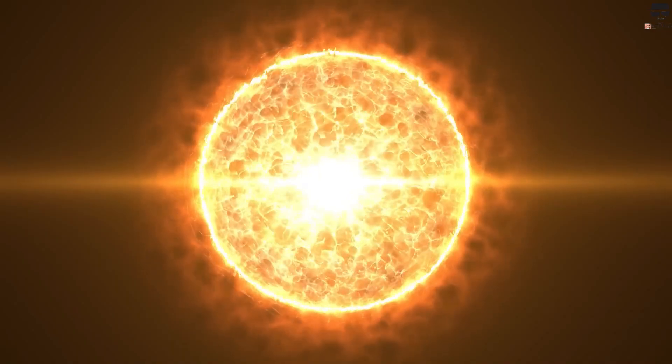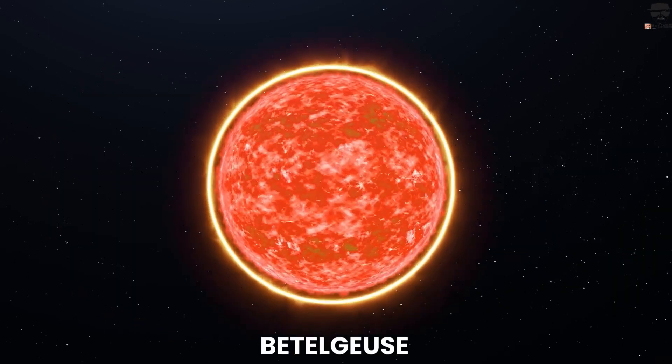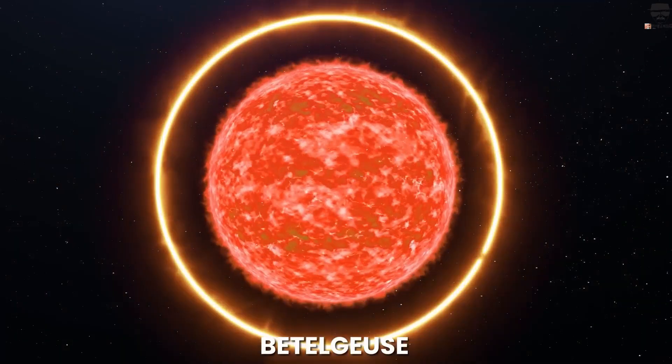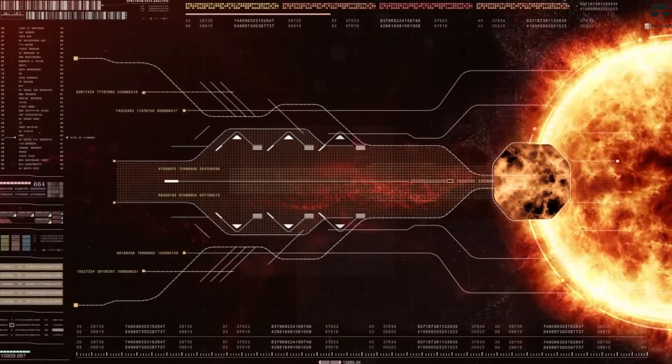Over time, as the inevitable supernova approaches, Betelgeuse will shed more mass, continue to expand, dim and brighten chaotically, and will burn progressively heavier elements in its core.